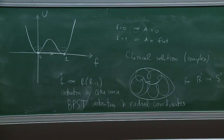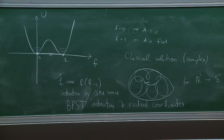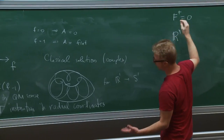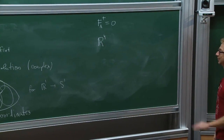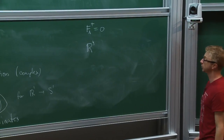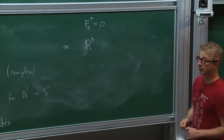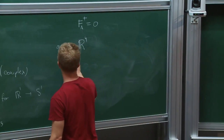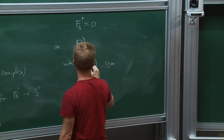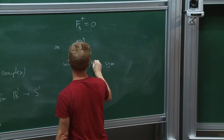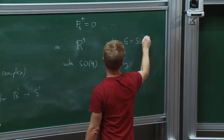What Belavin et al. did was study solutions of the self-duality equations — or rather, today we change orientation, so it will be the anti-self-duality equation on R4, which have rotational symmetry SO(4) with gauge group SU(2).